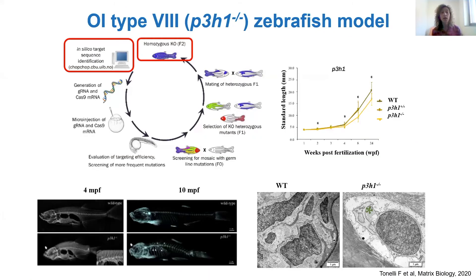The second model is one we generated by CRISPR-Cas9 genome editing, which is quite easy to perform in zebrafish. It is a model for OI type 8 with a knockout mutation in the prolyl 3-hydroxylase 1 (P3H1) gene. We demonstrated that the model reproduces the main clinical outcomes of human patients: bone deformity, fragility, and fracture. Most importantly, we demonstrated that the mutant collagen in both models is retained as protein inside the cell, so we think that improving cell homeostasis can ameliorate the bone phenotype in these fish and in OI.